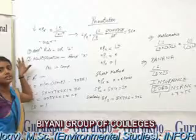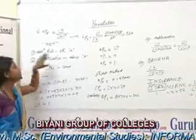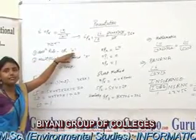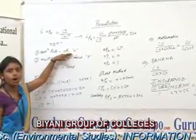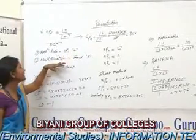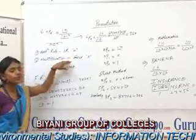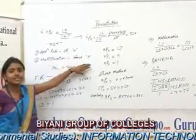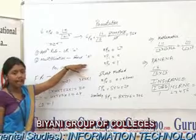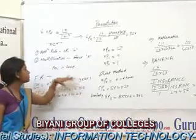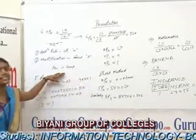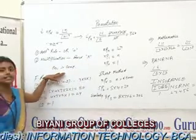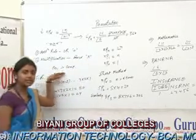For the additional rule, we use the plus sign for the word OR, and for the multiplication rule, we use the multiplication sign for AND. Permutation is always greater than combination.